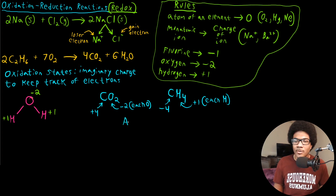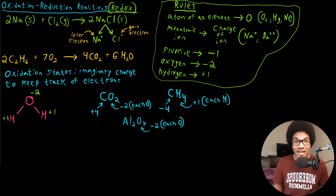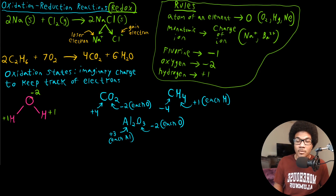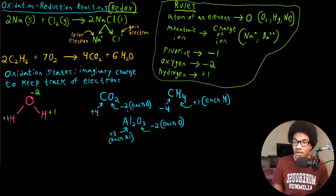Let's look at an example that doesn't involve carbon: Al₂O₃, aluminum oxide. Starting with oxygen, each oxygen has a -2 oxidation state. With three oxygens, their total contribution is -6. So each aluminum must have a +3 oxidation state to balance, meaning the Al₂ contributes +6 total, while the O₃ contributes -6. So that handles the oxidation state assignment for aluminum oxide.